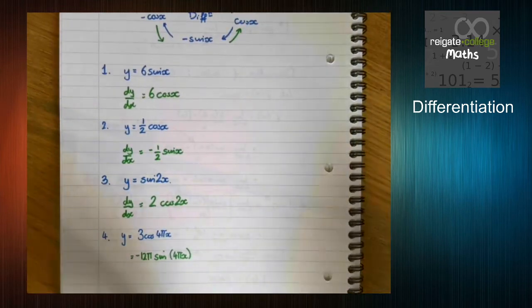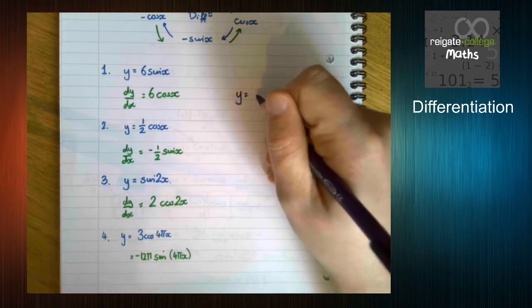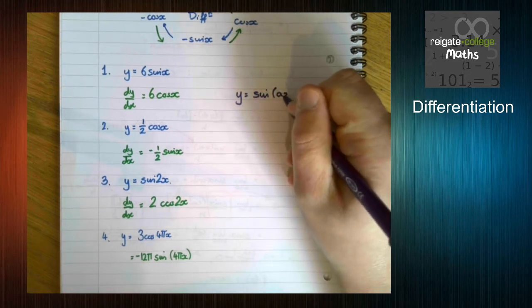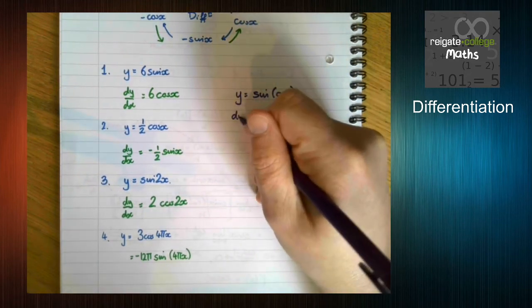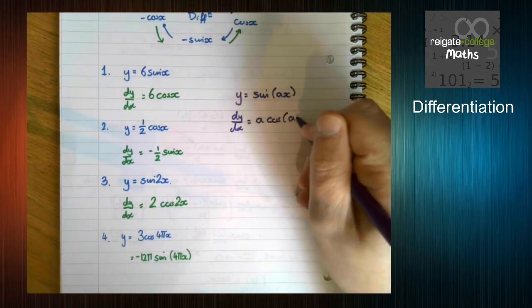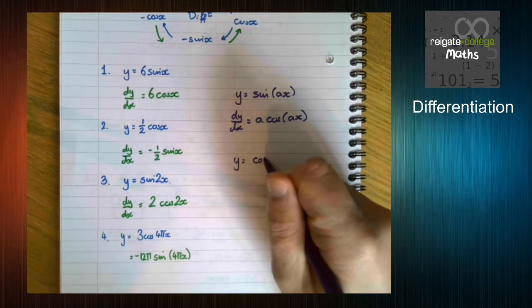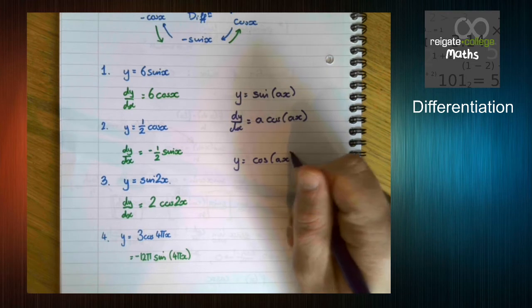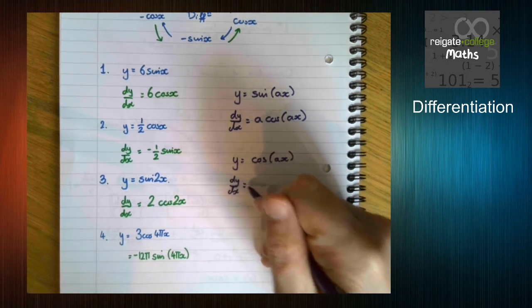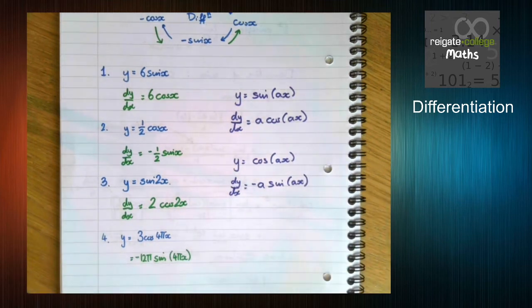The general rules are: if y equals sine of ax, then dy by dx is a cos ax; if y equals cos of ax, then dy by dx is minus a sin ax. You need to learn these rules as they are not in the formula book.